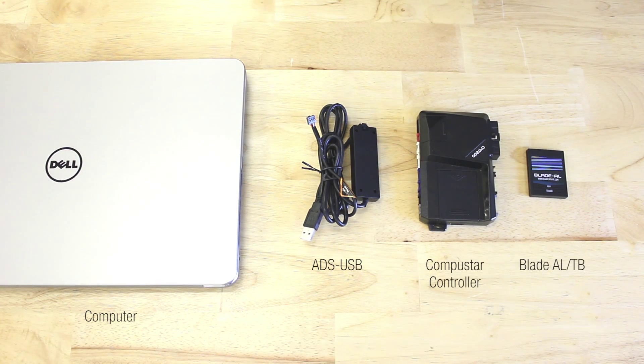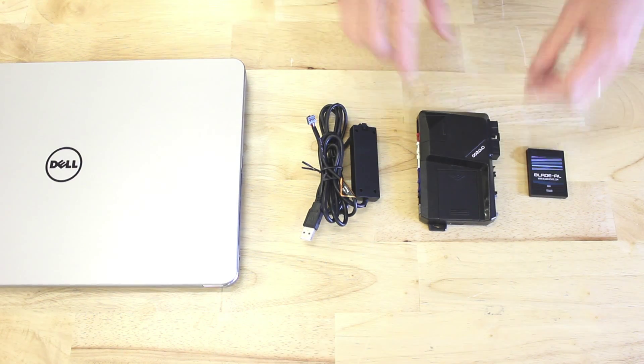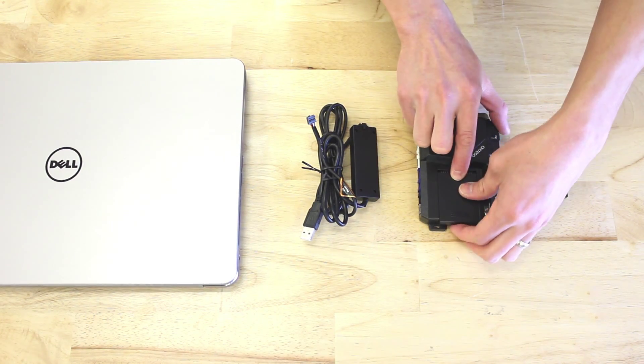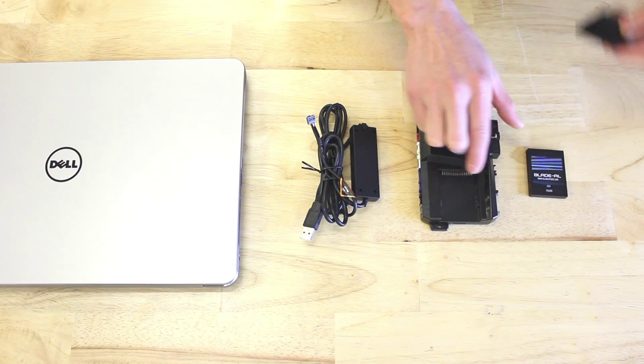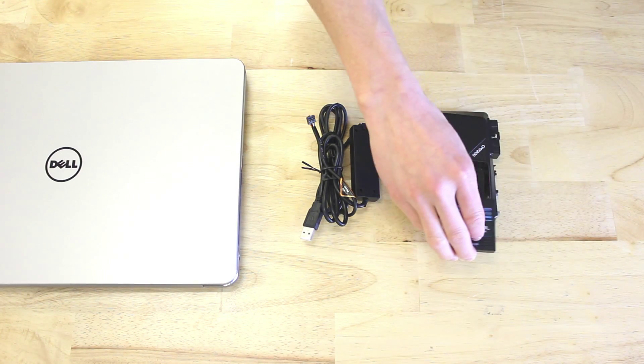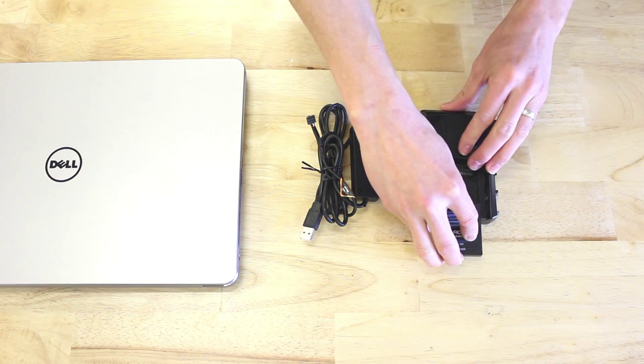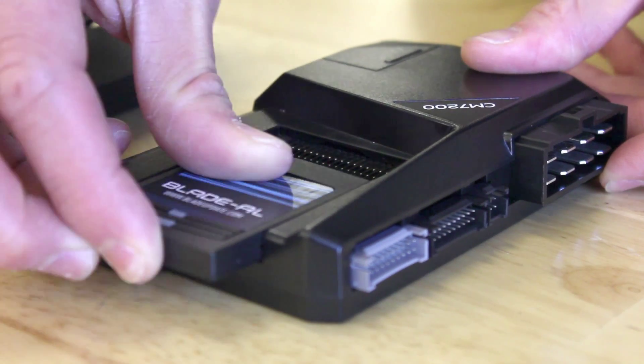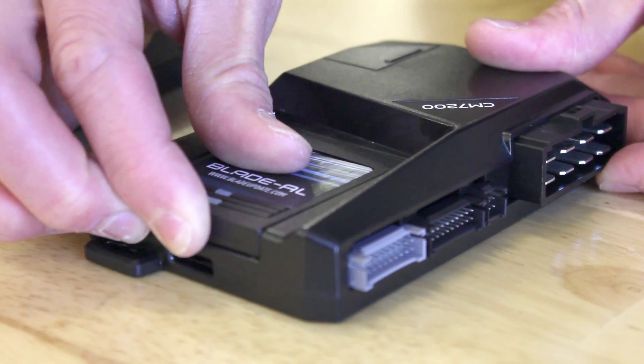Once this has been completed, we will need the following items: a computer, an ADS-USB, a CompuStar controller, and a Blade AL or TB.